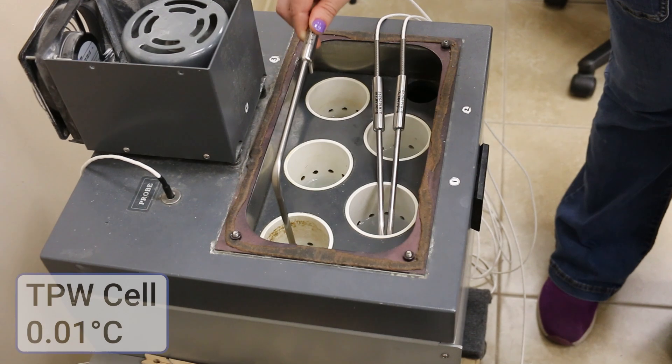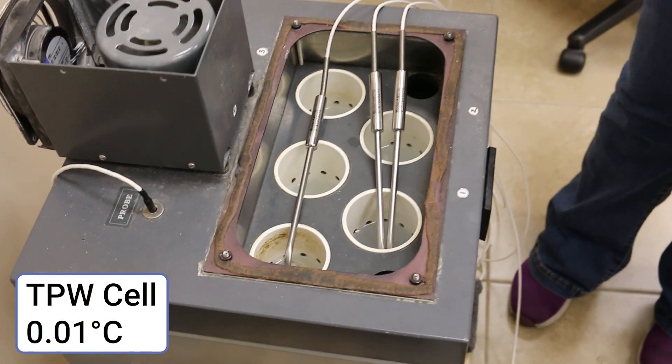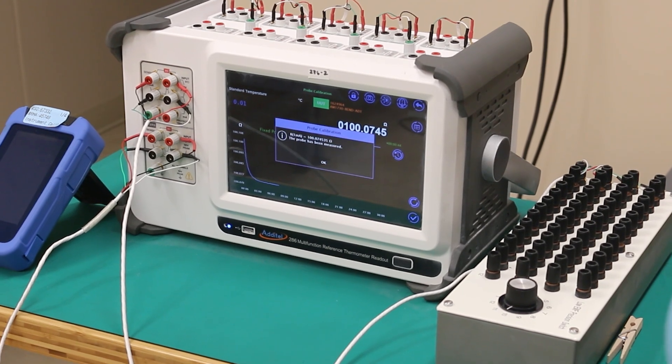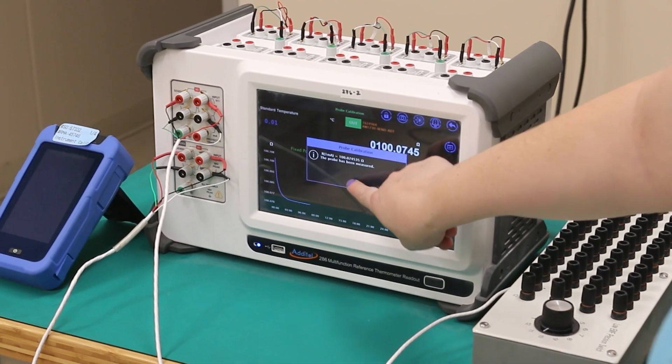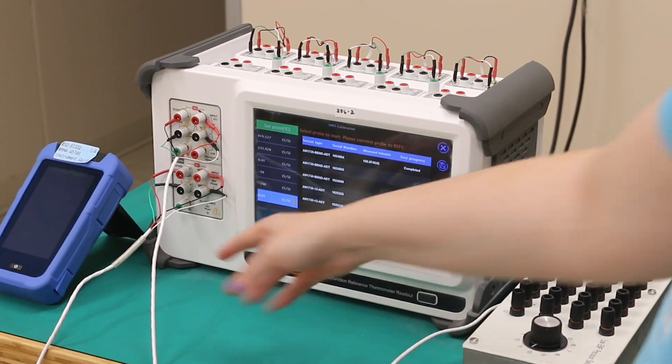Lastly, we will do one more triple point of water measurement with the exact same procedure as previously shown in this video. In the final calculation, both triple point of water values on each probe will be averaged to ensure the probes are functioning normally across both ITS-90 sub ranges.